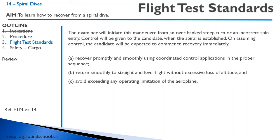On your flight test, the examiner is going to take control of the aircraft and initiate the maneuver from a steep turn or an incorrect spin entry. The examiner might slow the airplane down and apply full rudder at around 65 knots, and because the airplane's not stalled, it will roll over into a nose-down attitude. That entry can be difficult to recognize — you might think it's a spin — but remember, it will be high airspeed. You'll be expected to promptly recover using the correct control inputs, return to straight and level flight, and not exceed any operating limitation.